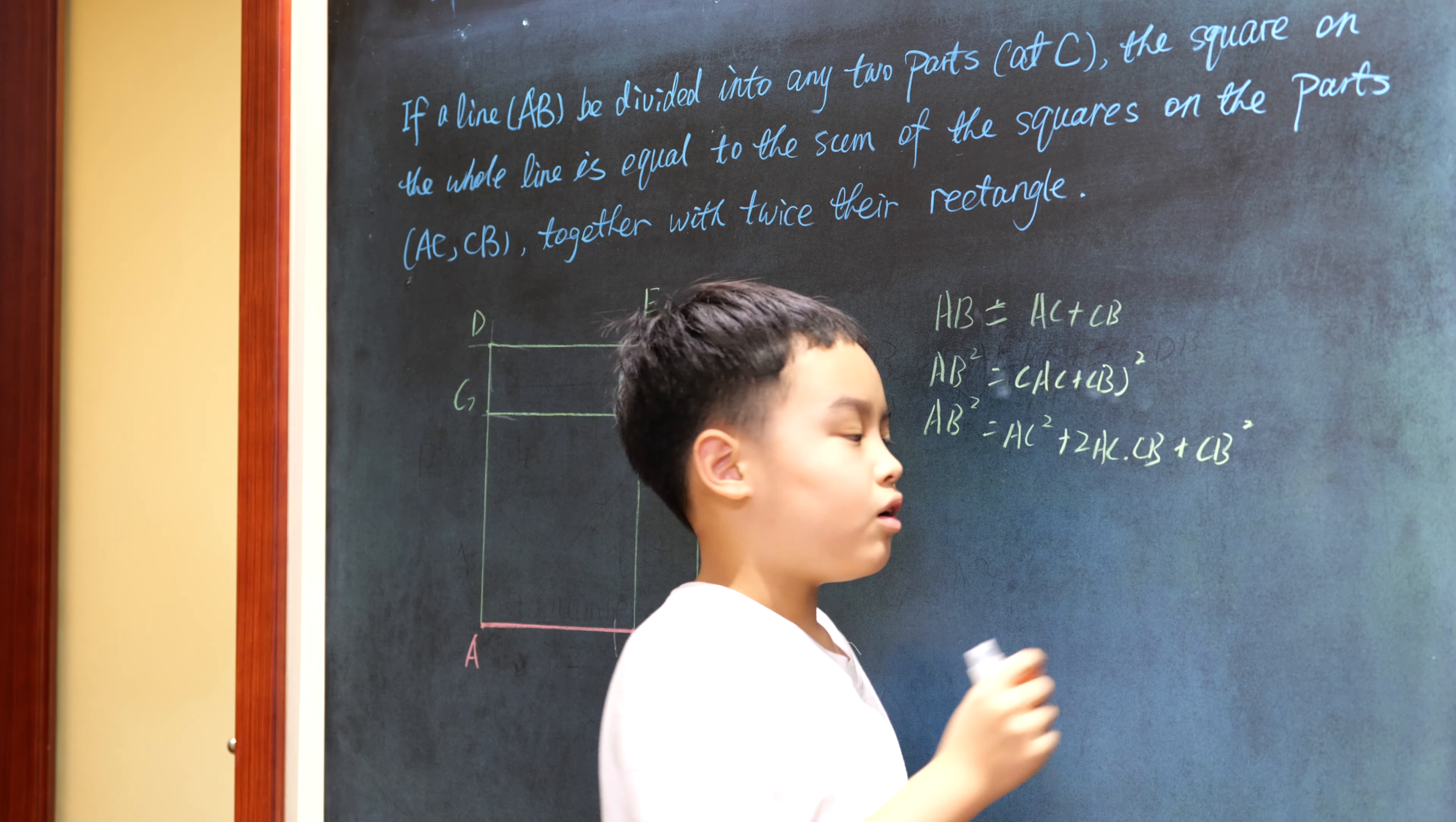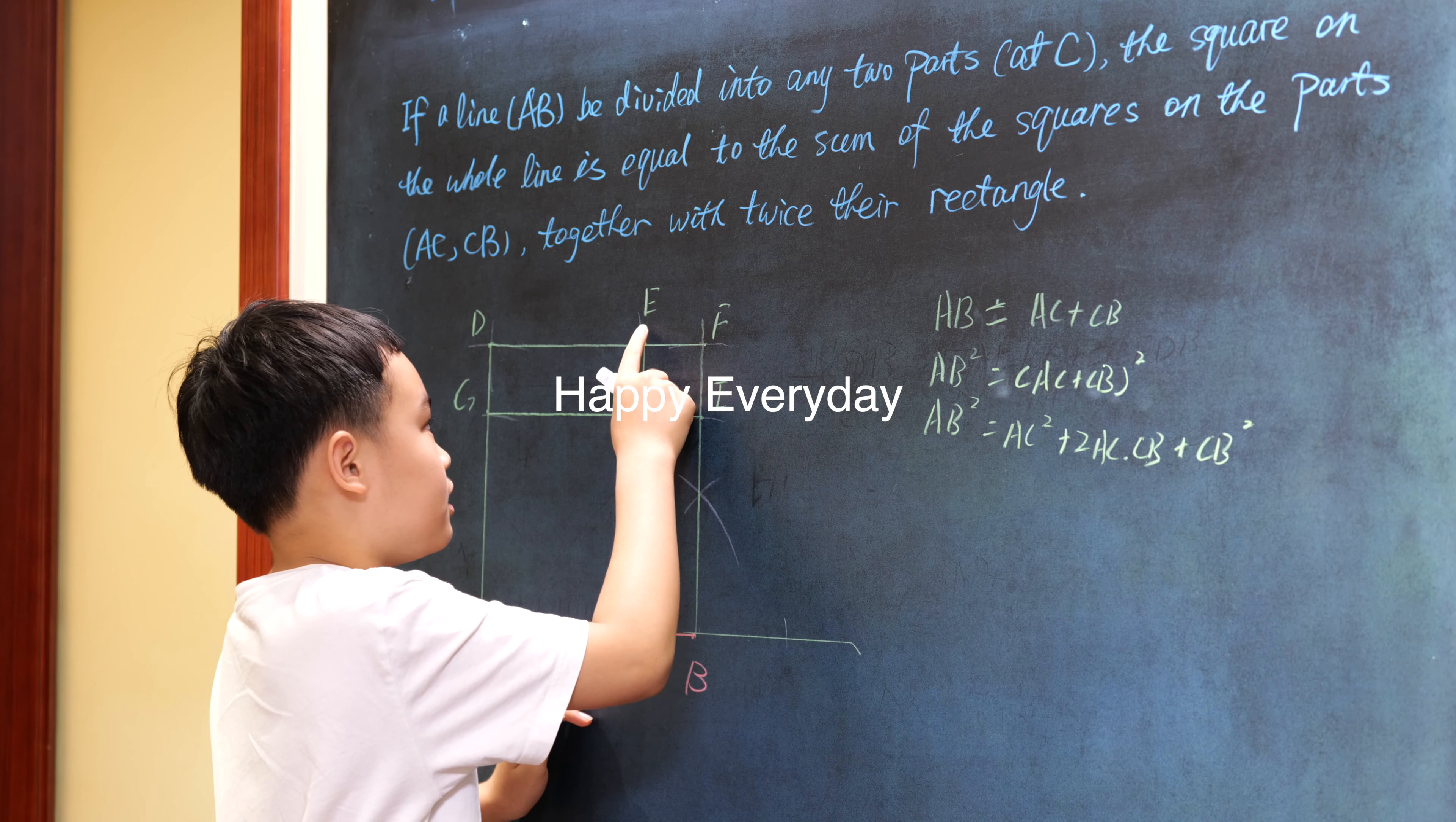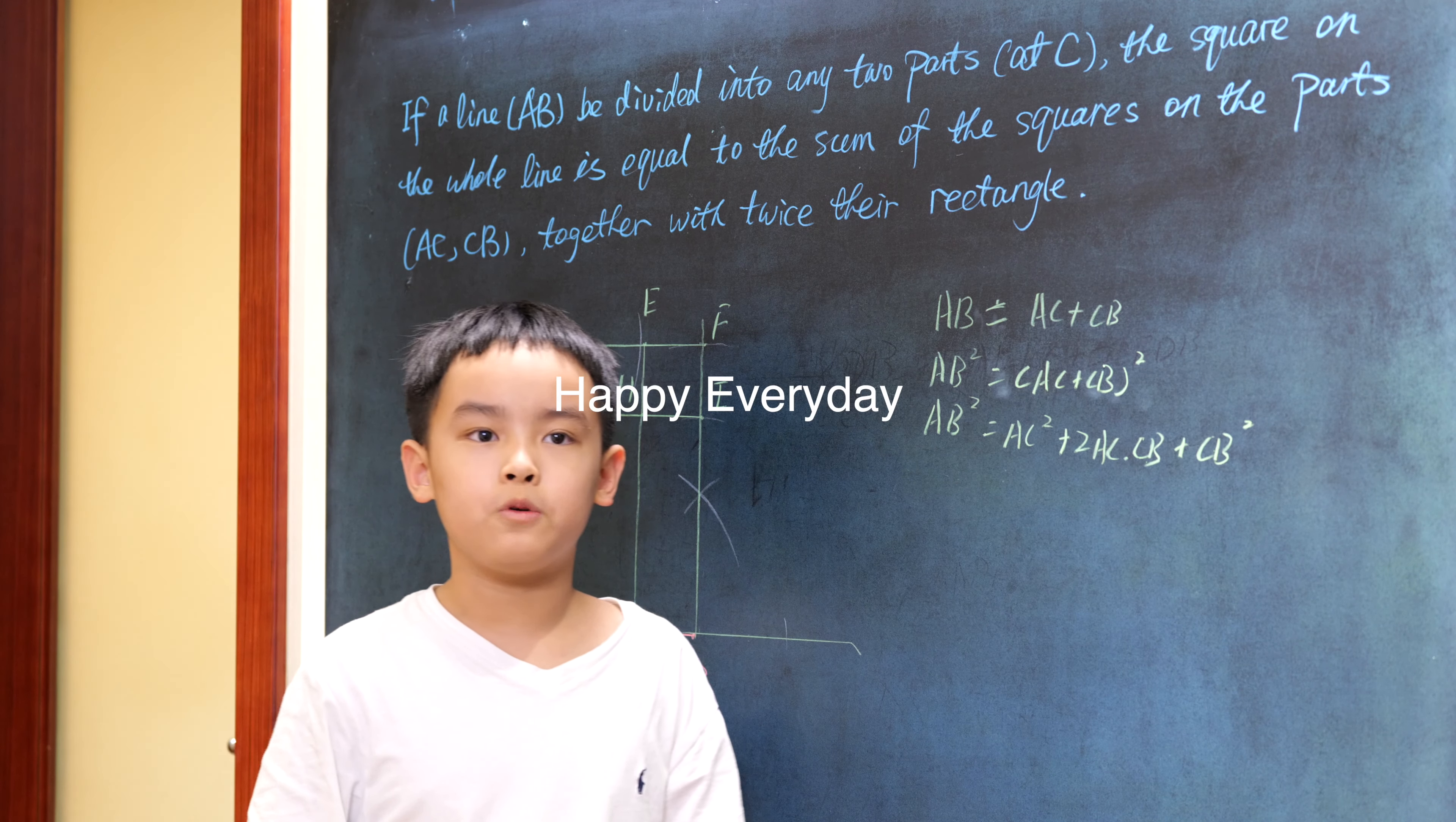And there we have it. We have the square of CB left, and we found it: it's EHIF. That's right. And that's what we need to prove.